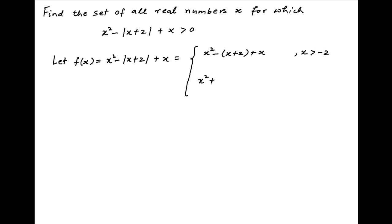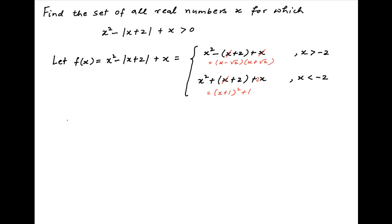Similarly, when x is less than minus 2, modulus of x plus 2 is equal to minus x plus 2. And therefore f(x) is equal to x squared plus x plus 2 plus x in this case. In the first case, f(x) simplifies to x minus root 2 times x plus root 2. In the second case, f(x) simplifies to x plus 1, whole square, plus 1.